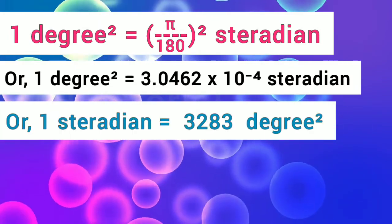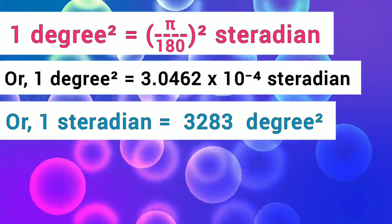Alternately, we can say that 1 steradian is equivalent to 3,283 square degrees.